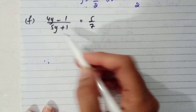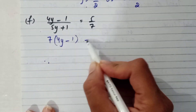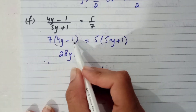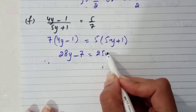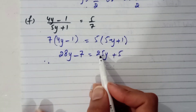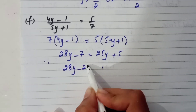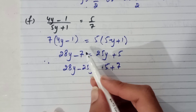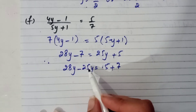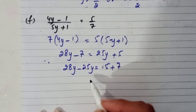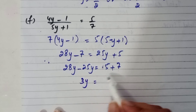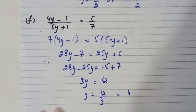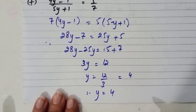Part f: we use cross multiplication. (4y minus 1) multiplied by 7, and (5 plus 1) on the other side — that gives 28y minus 7 equals 25y plus 5. We bring 25y to that side: 28y minus 25y equals 5 plus 7. By subtracting 25 from 28 we get 3, so 3y equals 12. Dividing by 3 gives y equal to 4. That is the answer of part f.